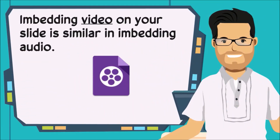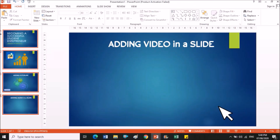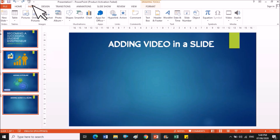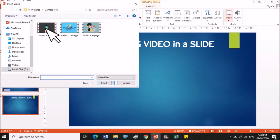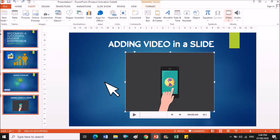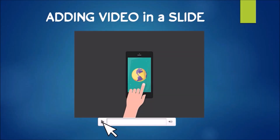Embedding video on your slide is similar to embedding audio. If you want to put a video on your slide, go to the Insert tab and click Video, then choose Video on Your Computer. Click Insert, and then you can resize the video and place it in a good position. Now you have a video on your slide.